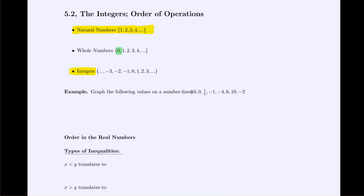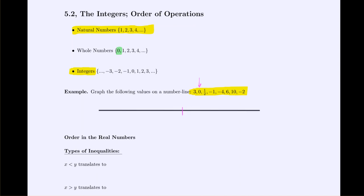Now we're asked to graph these values on a number line: 3, 0, 1½, negative 1, negative 4, 6, 10, and negative 2. We start with our number line and since 0 is one of our numbers, let's graph 0 first in the middle, since negative numbers come before and positive numbers come after.